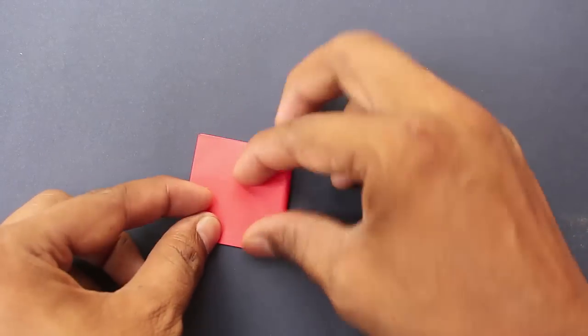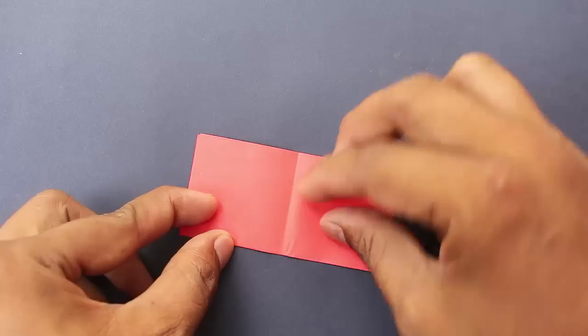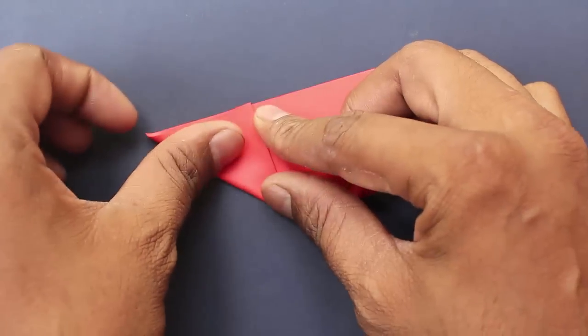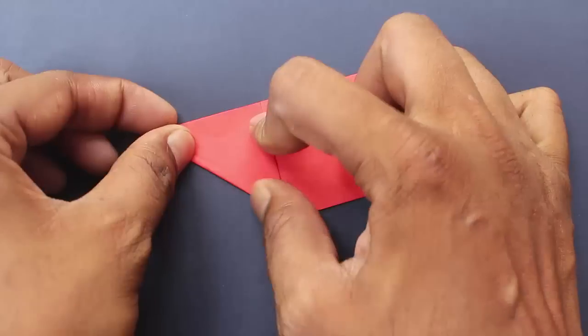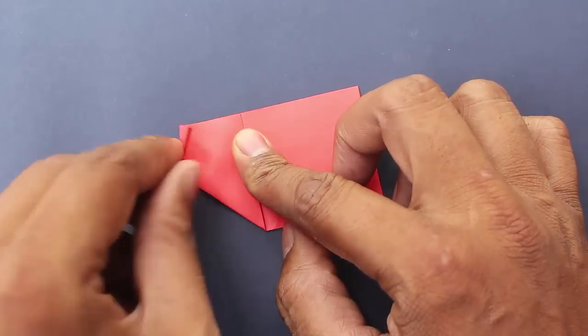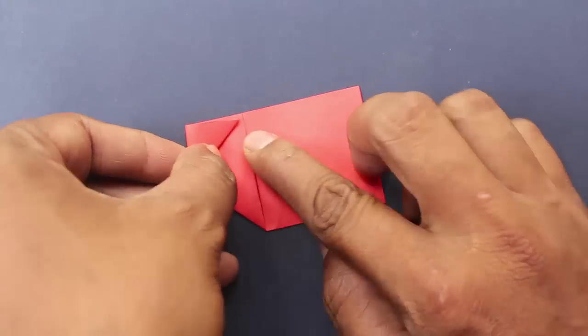Now open the model. Fold the left corner to the midline. Again, fold the left corner to the midpoint of the square.